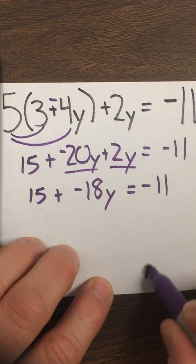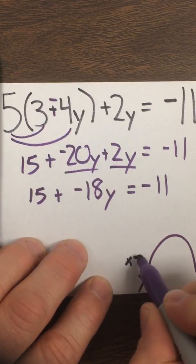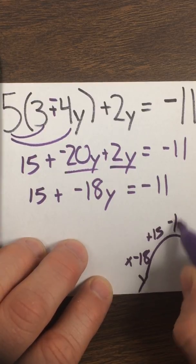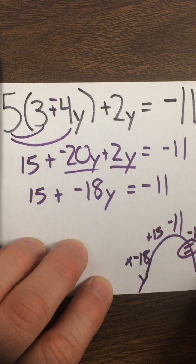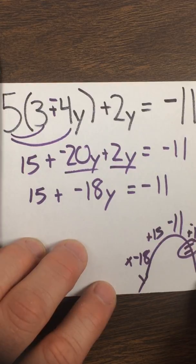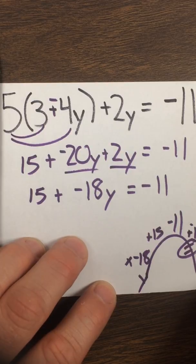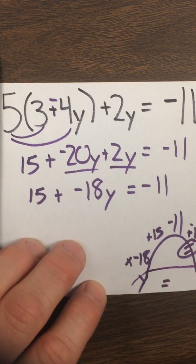I'll solve it first with rainbow. There was a y — they took it times negative 18, they added 15, and they got negative 11. So we're going to subtract 15, hit equals on the calculator, divide by negative 18. I would get negative 26. Negative 26 divided by negative 18 becomes a positive 1 and 8 eighteenths, which simplifies to 1 and 4 ninths. y equals 1 and 4 ninths.